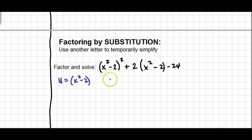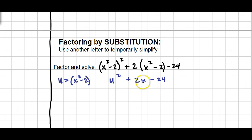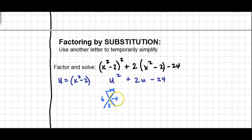Anytime I see x² minus 2, I replace it with u. If I take out x² minus 2 and replace it with u, I get u² for the first term. For the rest, I'm left with 2u minus 24. Now I try to factor that — it's a trinomial with a leading coefficient of 1. Using the diamond, I need factors of negative 24 that add up to 2. The numbers that work are 6 and negative 4, so I factor into (u+6)(u−4).